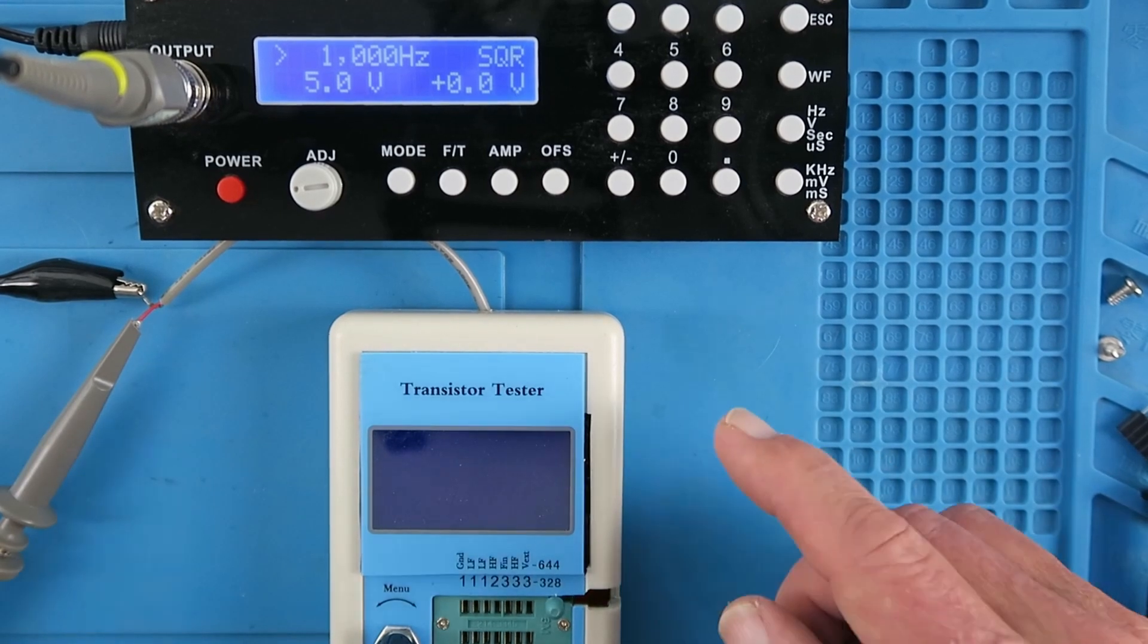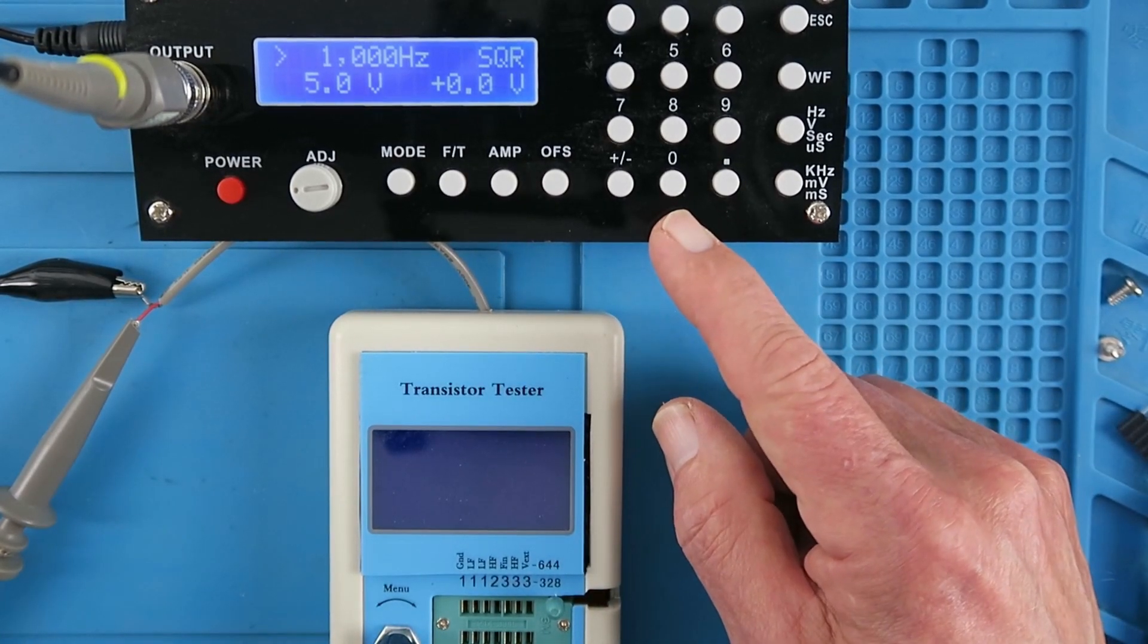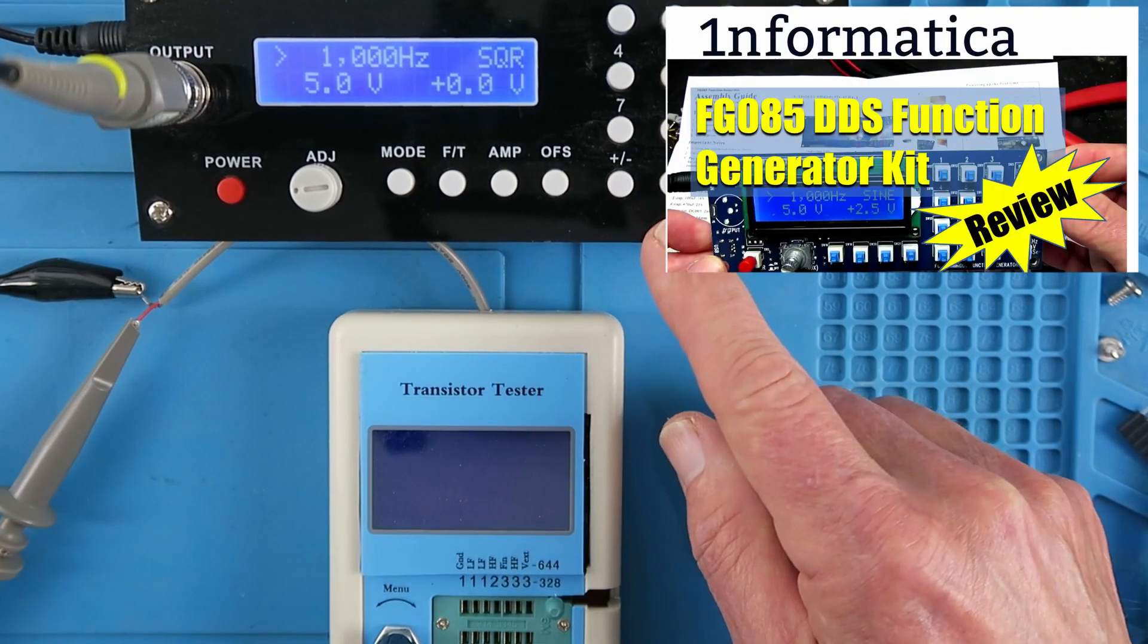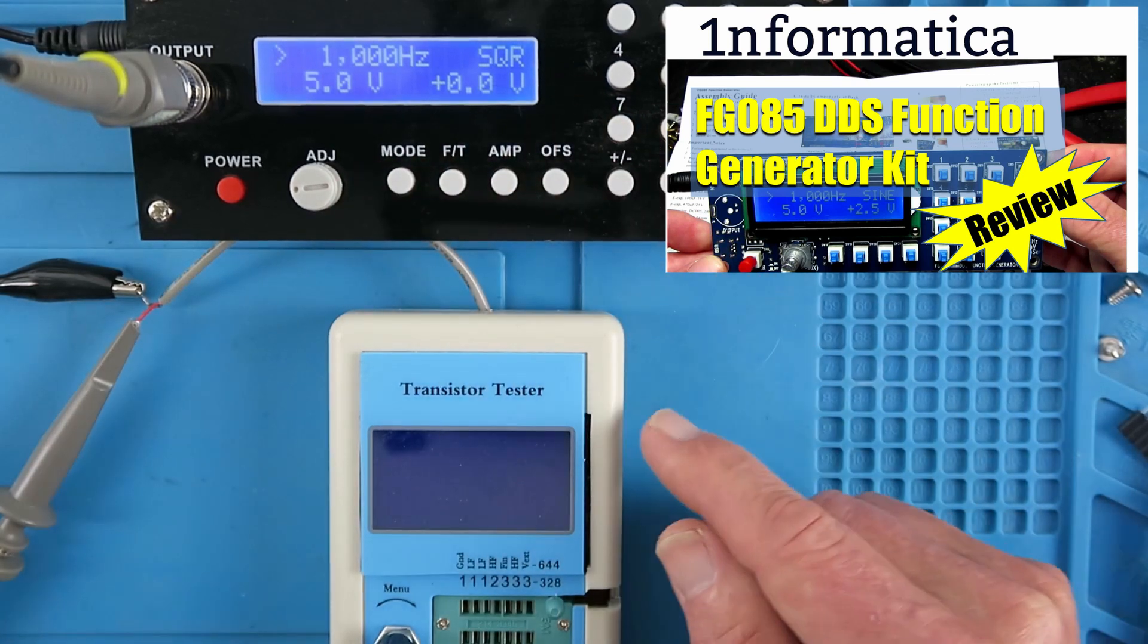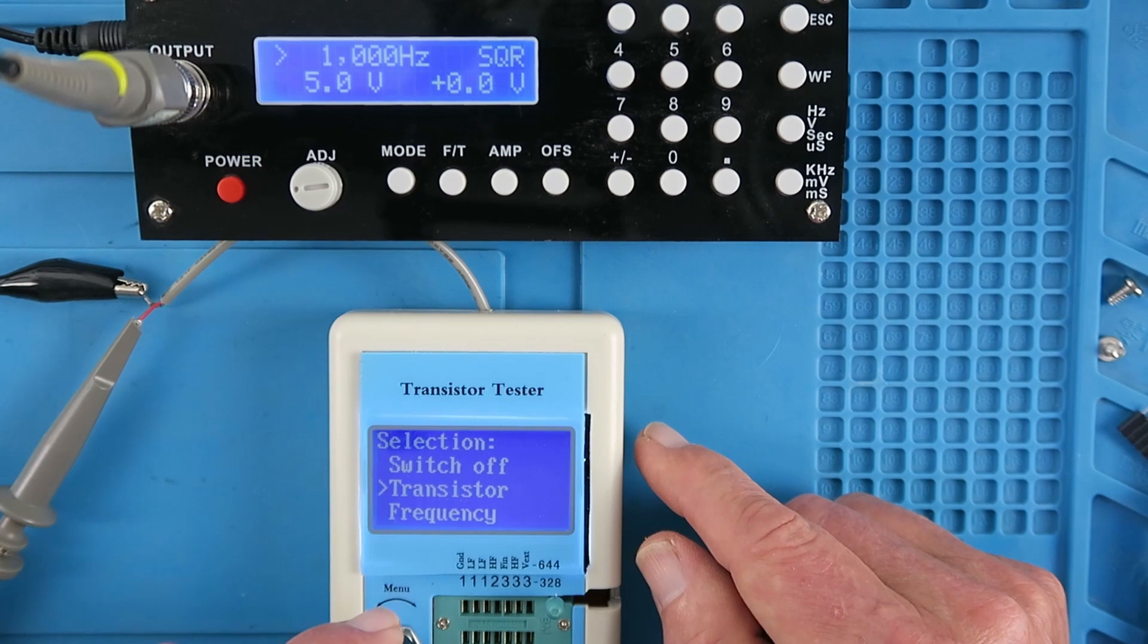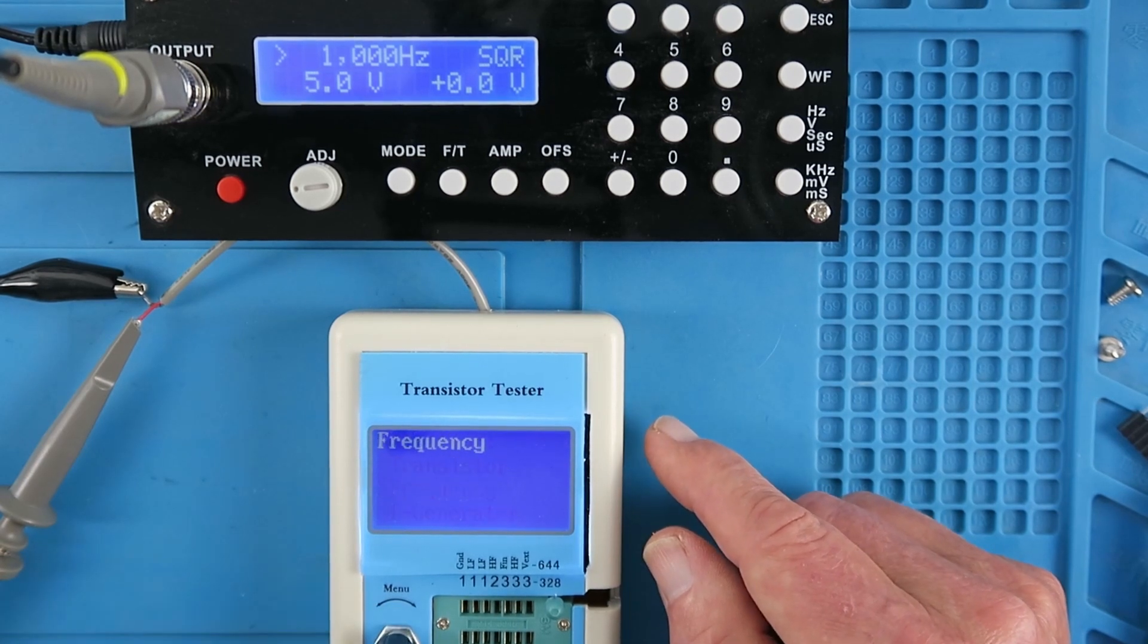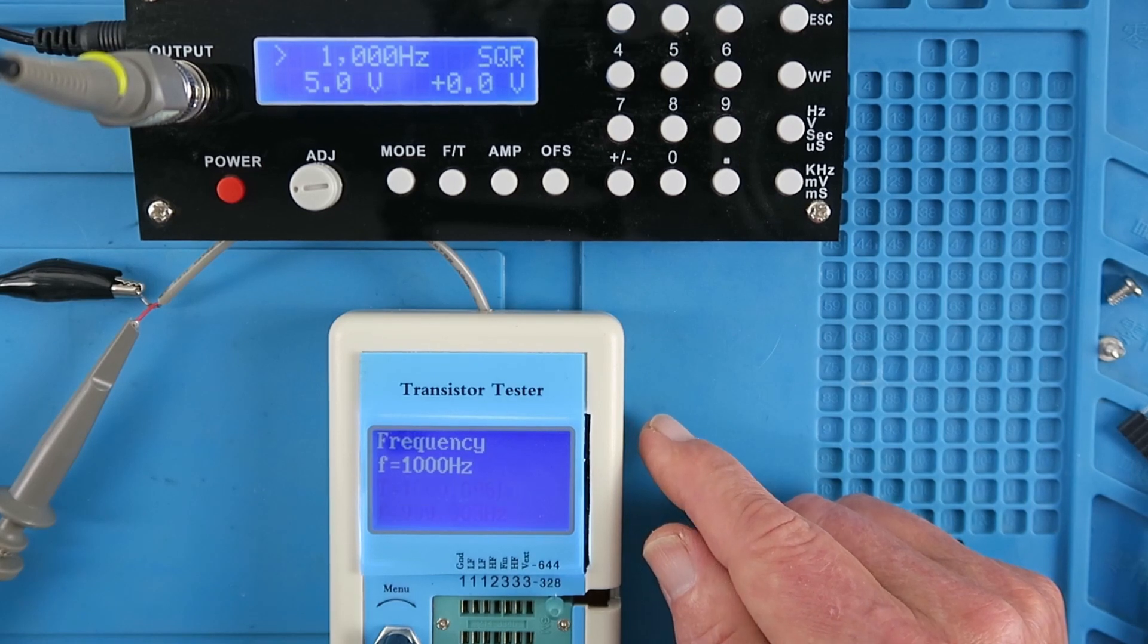To test the frequency counter on our little tester here, I've just hooked up the function generator that I built and set it to a fairly standard 1kHz square wave at 5V. So if we long press the tester and select frequency, we can see 1kHz, so all is good.